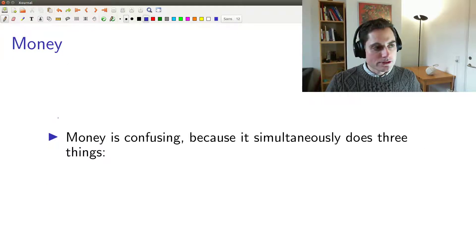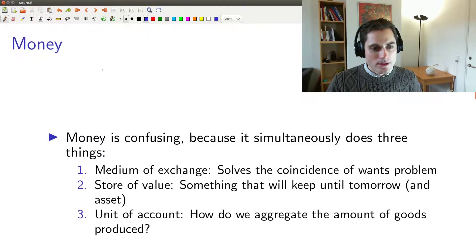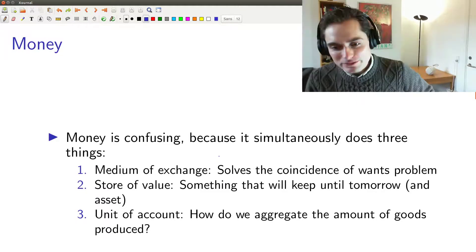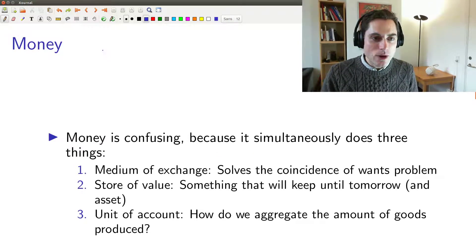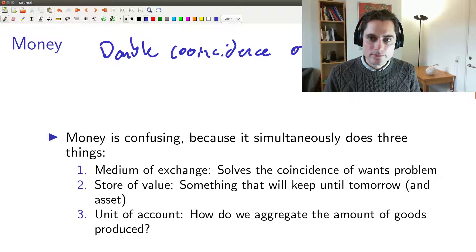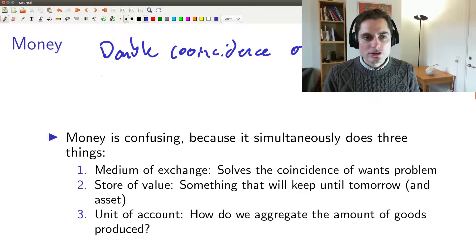Alright, so I think that one of the reasons why money makes everything confusing is because it simultaneously does three things. Money is a medium of exchange. I'm sure you guys have all studied this in either micro or macroeconomics as undergraduates, so it's just a review. But you have this double coincidence of wants problem.